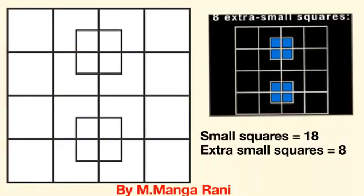1, 2, 3, 4, 5, 6, 7 and 8. Total 8 extra small squares are there.